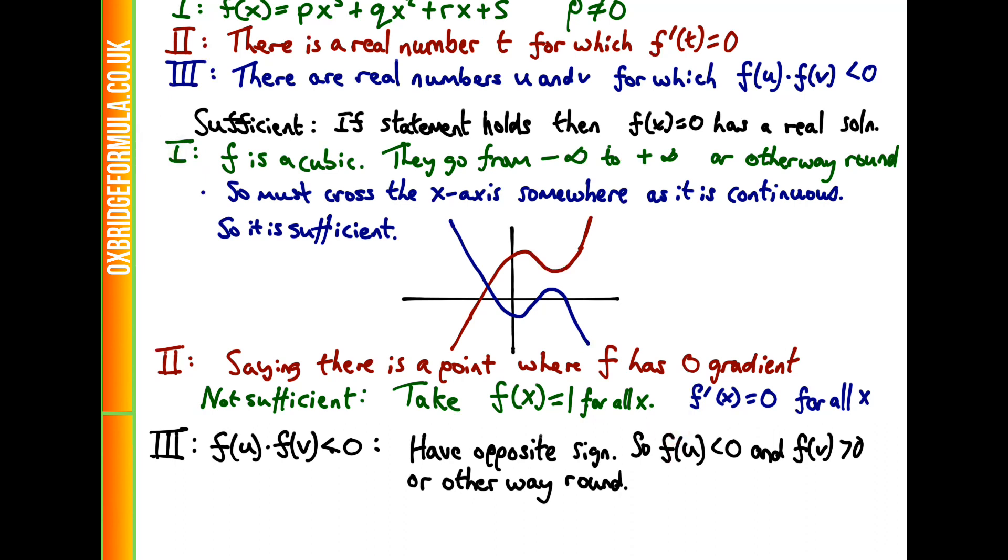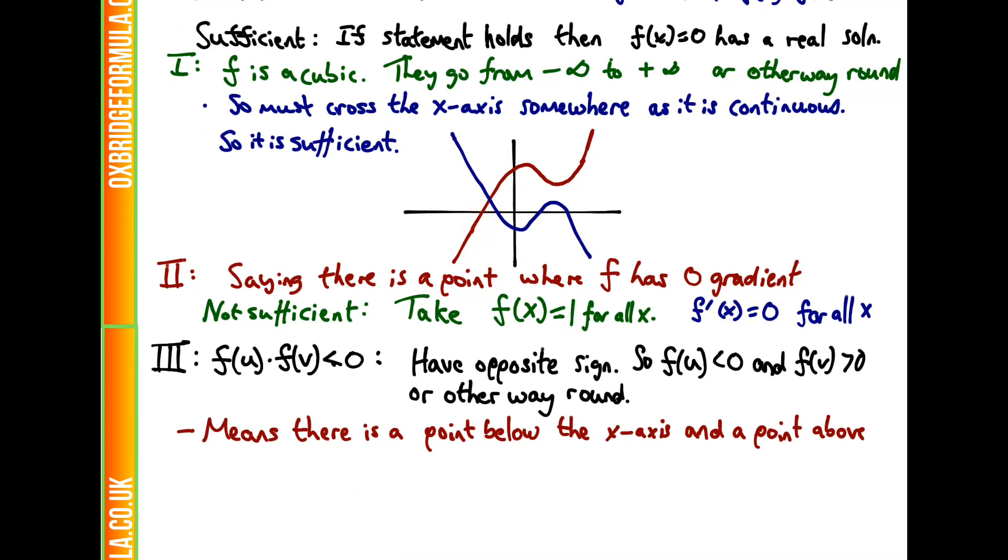If f(u) is less than 0, that means f(u) is going to be below the x-axis. There's a point below the x-axis and there's going to be a point above the x-axis. So by continuity, because f is a polynomial, it must cross the x-axis somewhere. You can't just jump from below the x-axis to above it without passing it originally. So the third statement is sufficient.